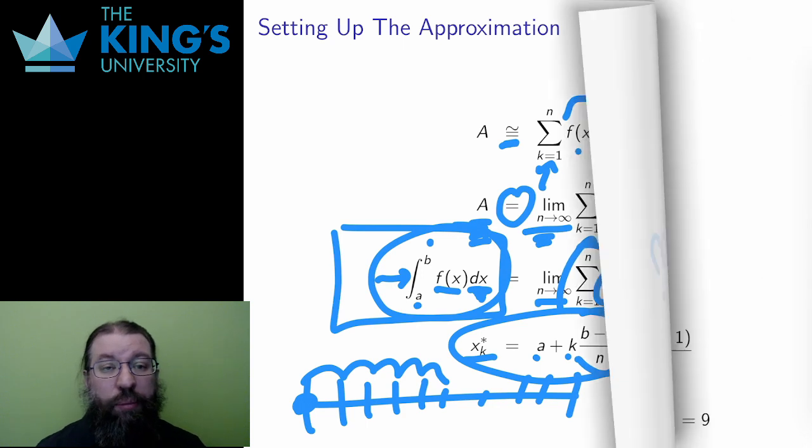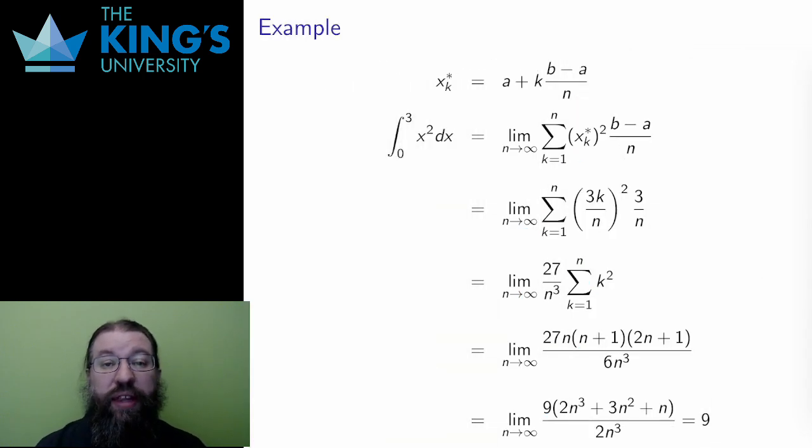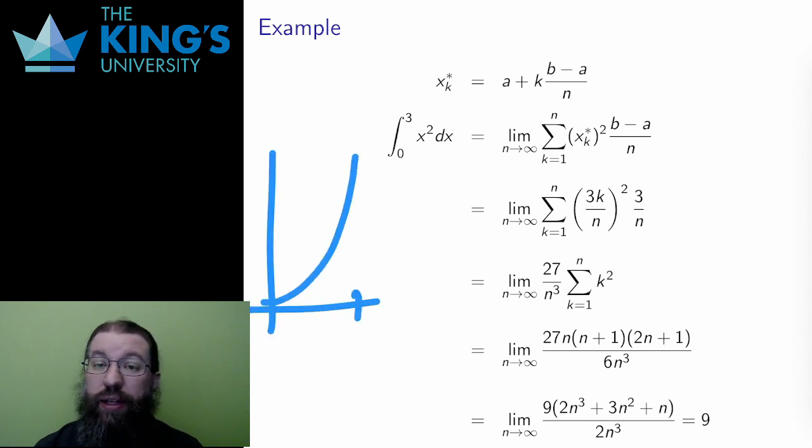So, let me do an example. Say I want the area under the quadratic y equals x squared between 0 and 3. That area is calculated by the definite integral. I set up the Riemann definition: the limit, the sum, the function, and the width.